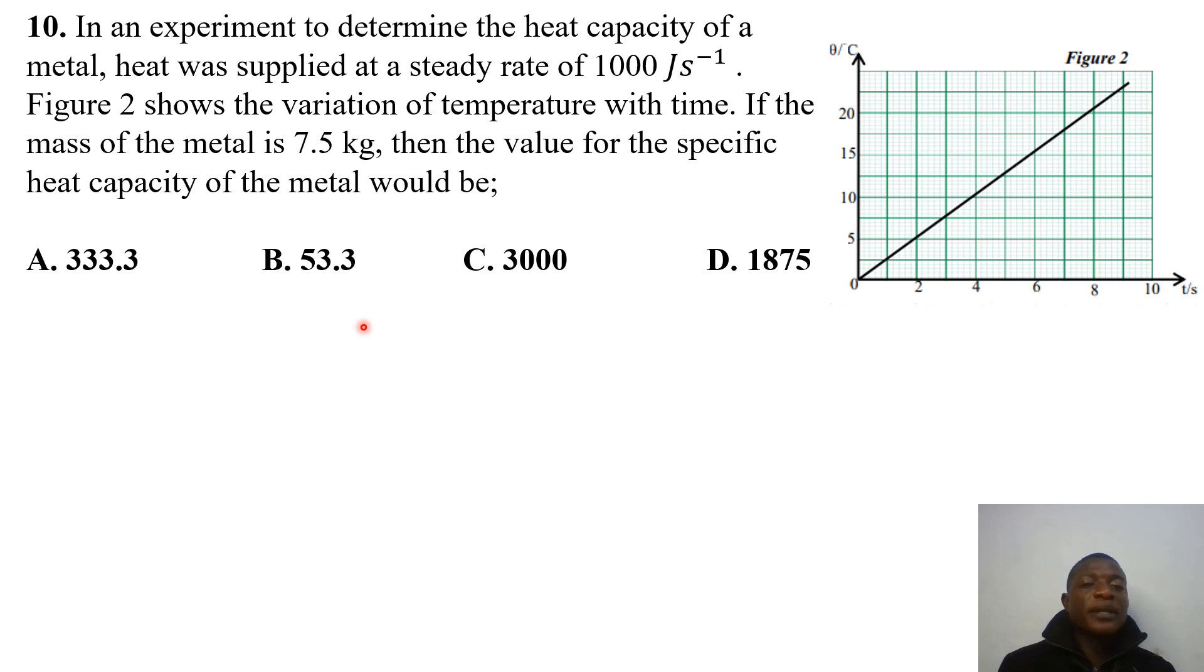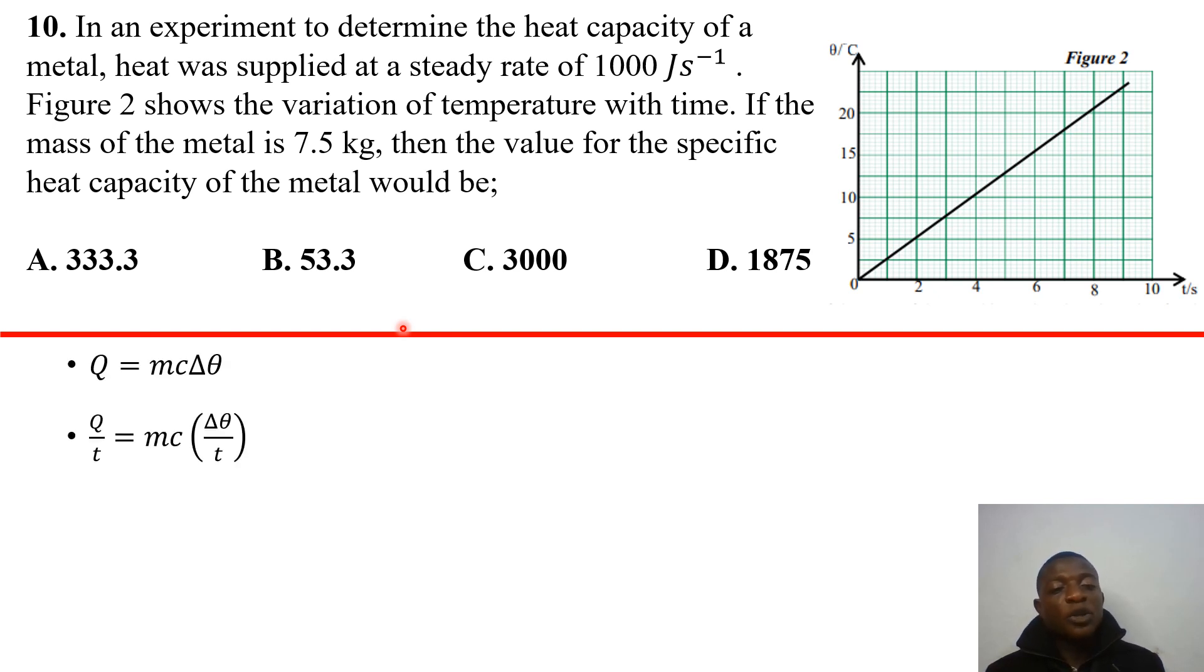Question 10: We are having an experiment to determine the heat capacity of a metal. Heat is supplied at a steady rate of 1000 joules per second. Figure 2 shows the variation of temperature with time. If the mass of the metal is 7.5 kilograms, the value for the specific heat capacity of the metal would be. Okay. So the first thing is, you have to realize the equation that is required here. So it's actually Q equals MC delta theta. If we ratio time on both sides, you must realize that you have the time rate at which heat is applied. So you have Q over T equals MC delta theta over T. Now, this is our temperature versus time graph. So delta theta over T simply gives us the gradient of this graph.